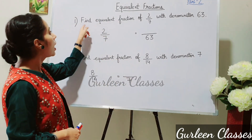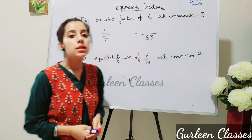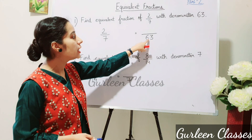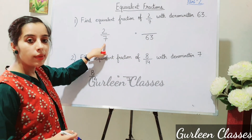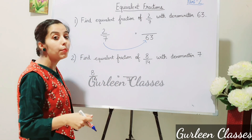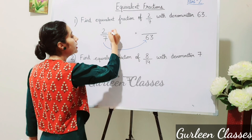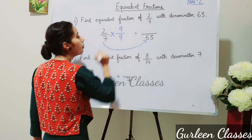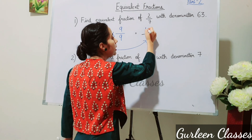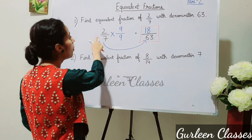Now another question: find the equivalent fraction of 2/7 with denominator 63. The fraction given is 2/7 and we need denominator 63. Since the denominator needs to be bigger, we multiply. 7 × 9 = 63, so we multiply numerator and denominator by 9. 2 × 9 = 18. So 18/63 is the equivalent fraction of 2/7.